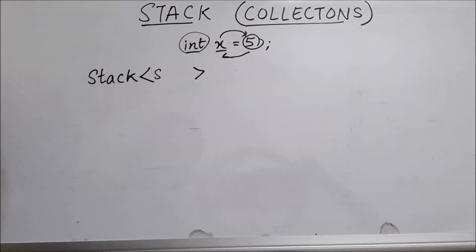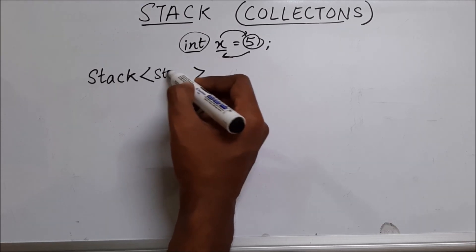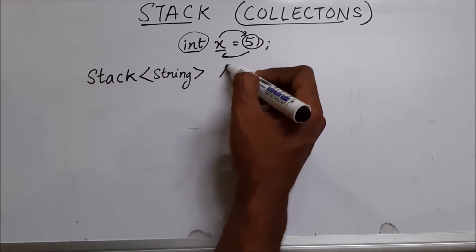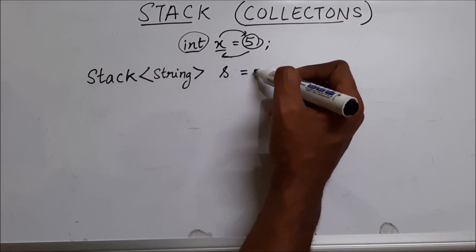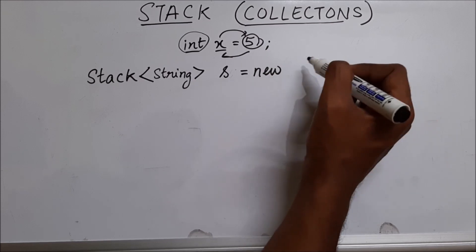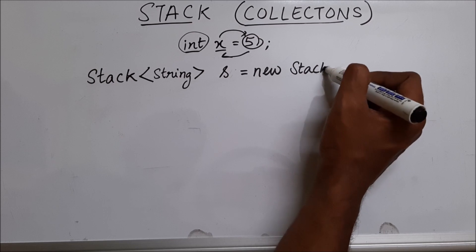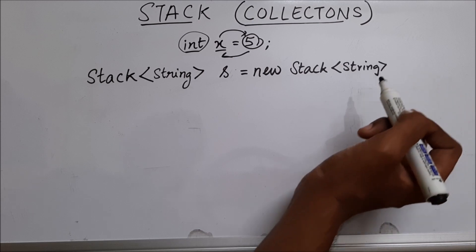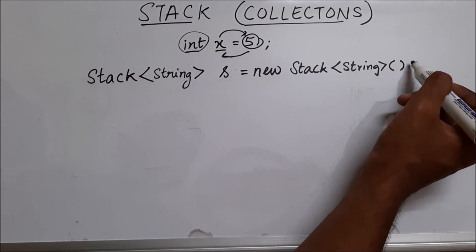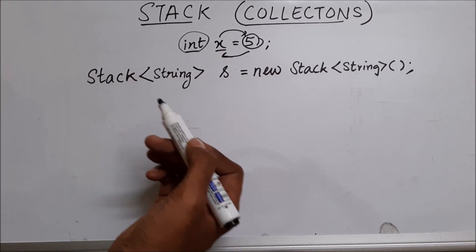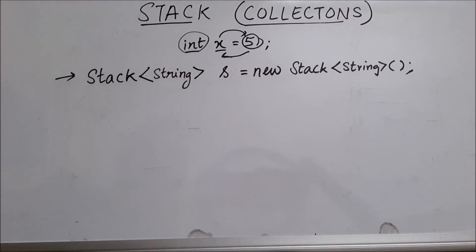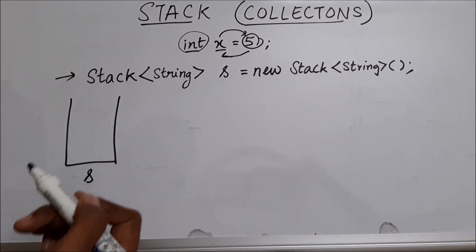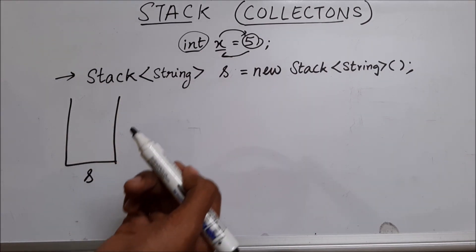Let's say we are having notebooks, so I'm going to put string values. This is the data type. Now we need to name our stack. So let me call this stack S, equal to new Stack, again with the angle brackets where you mention the data type, followed by brackets and semicolon. So this is the syntax to create a stack in Java. We have created a stack whose name is S and it is empty since we did not add anything inside the stack.